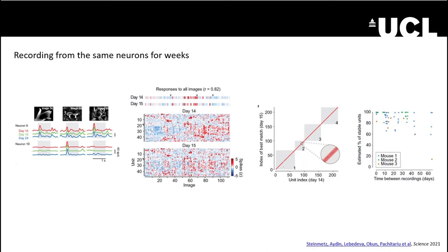This opens the possibility of new kinds of recordings where you follow the same neurons and ask what is changing about them. This is already doable with two-photon imaging, but now you can do it deep in the brain.